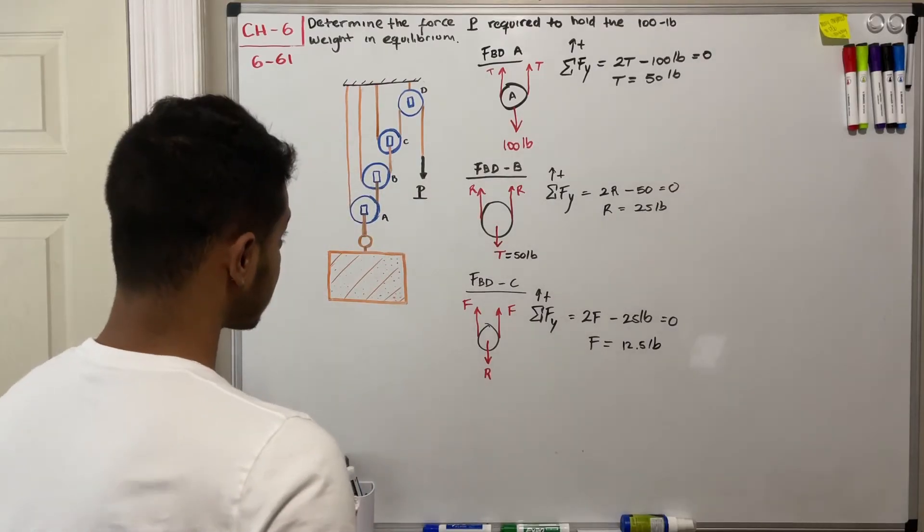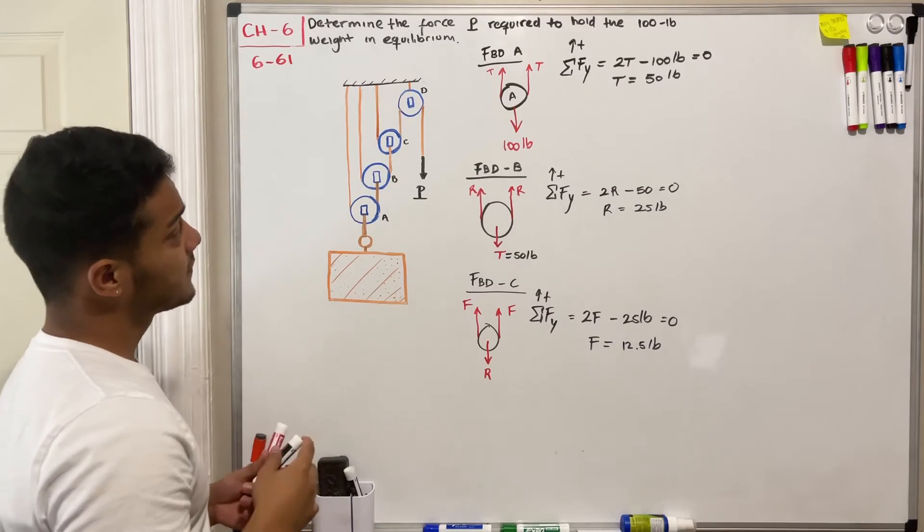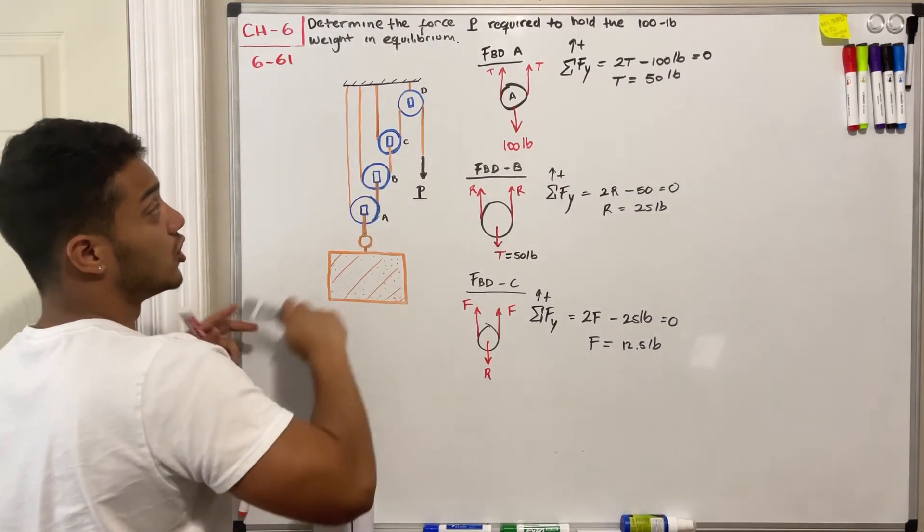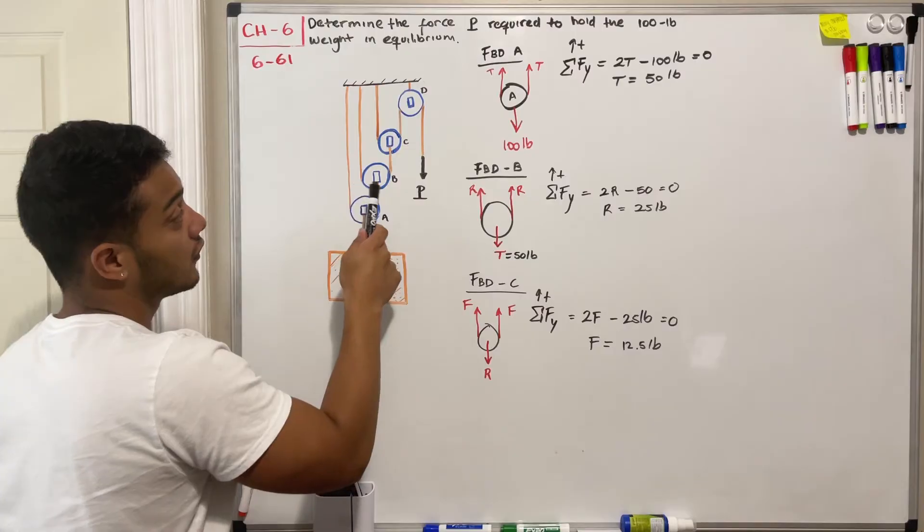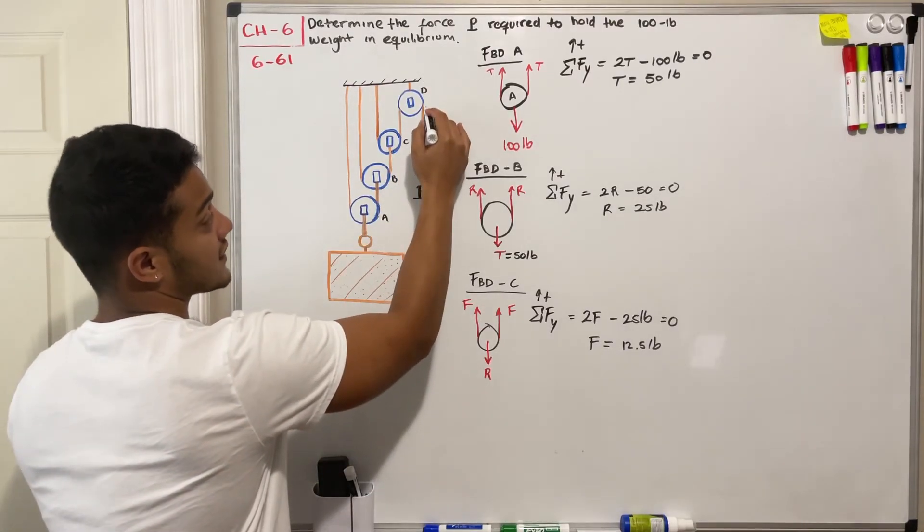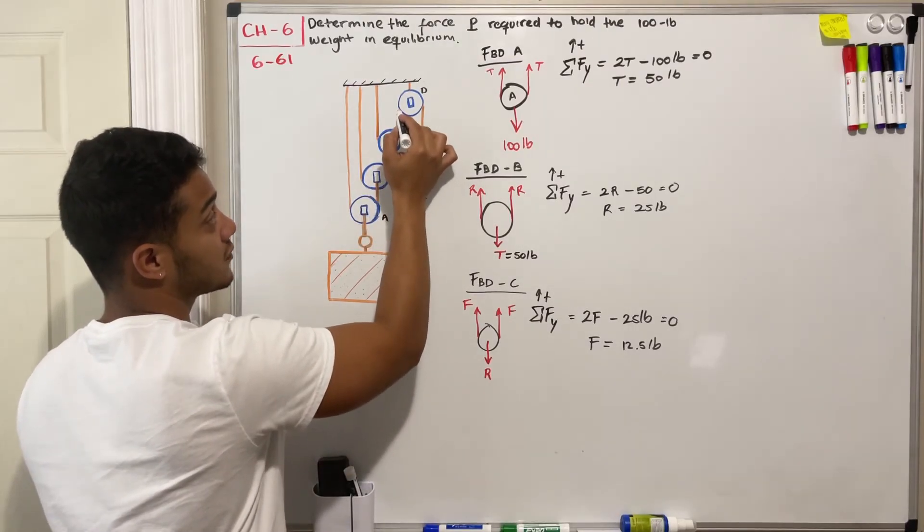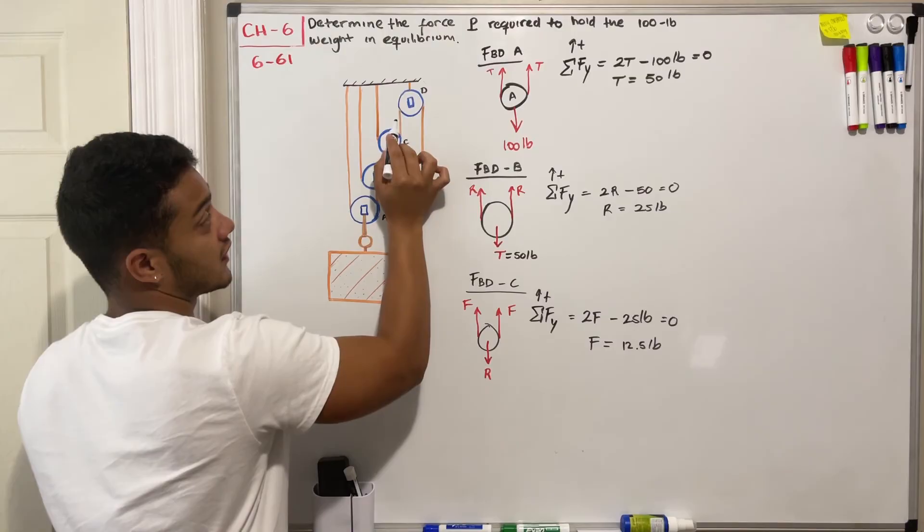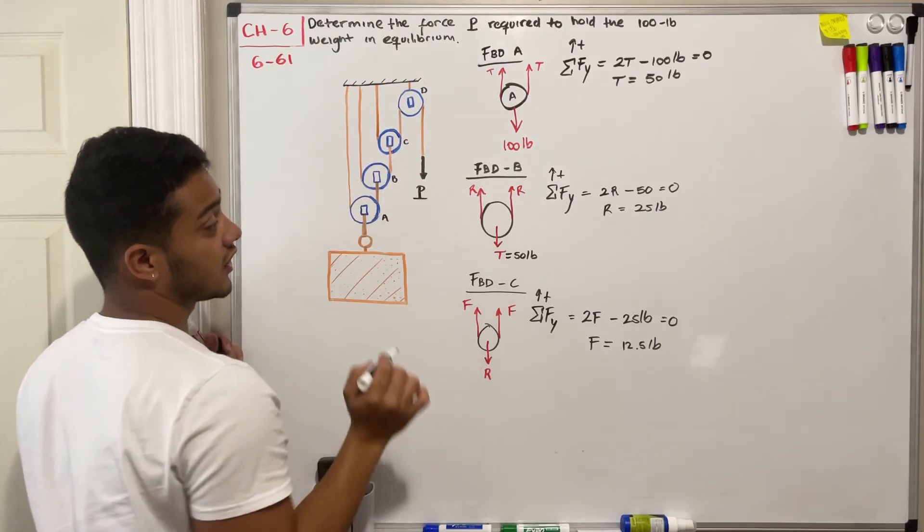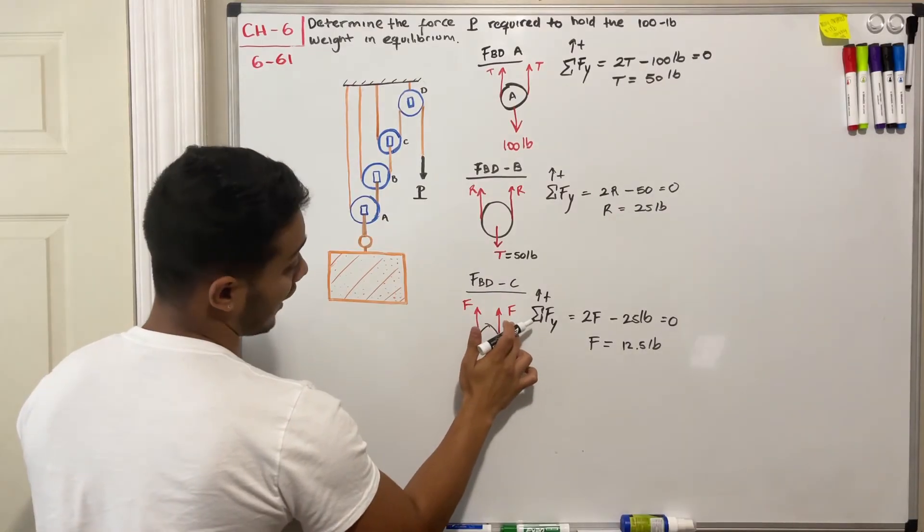Now the question is asking for P, so what is P? If we were to pay attention to my pulley D, we'll find out that the pulley has this tension P going this way. Therefore this P has to be the same one that is here next to C, and we just found that one out, which is this guy that we call F.